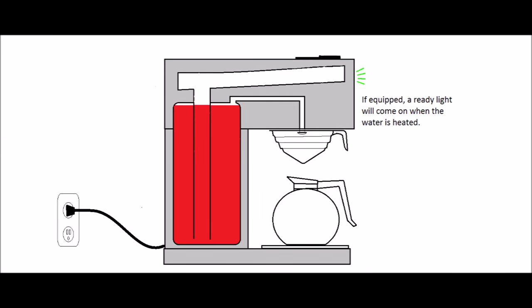If equipped, you should see the ready light come on in 20 to 30 minutes. If a ready light is not installed, wait about 30 minutes after turning on your brewer before making a pot of coffee.